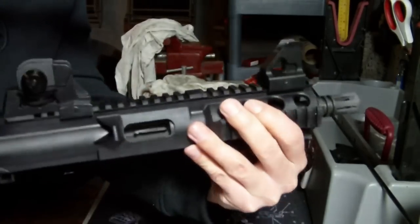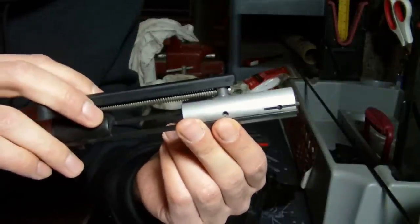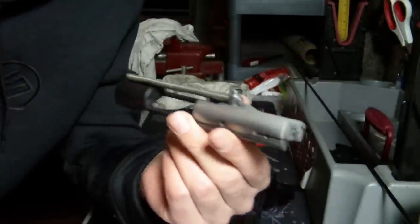You can take off the open sights. I just kind of prefer to leave them on to keep zero. It makes it a little easier when I get to the range so often. Pull your charging handle right off the top, and you're left with just the bolt carrier assembly.